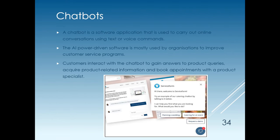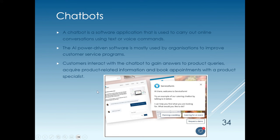Under new trends and technologies, there is a lot of talk about chatbots. A chatbot is a software application used to carry out online conversations using text or voice commands. It is not a real person — it is usually AI-driven software. Based on what you type, the AI works out what to answer. Many of you have worked with ChatGPT. Customers can interact with a chatbot to gain answers to product queries, acquire product-related information, and book appointments with a product specialist.